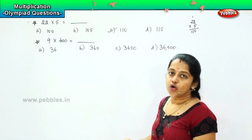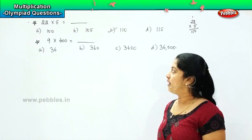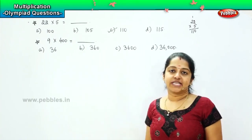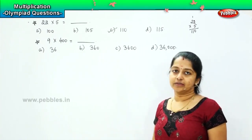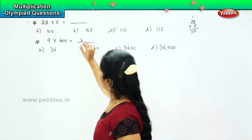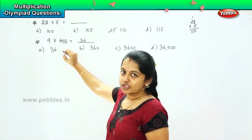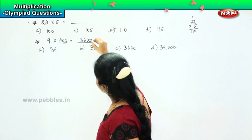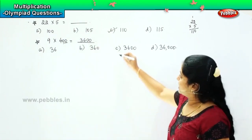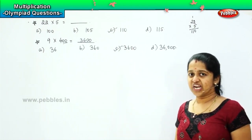So this follows the multiplication rule of 10s and 100s, where we will be adding the number of 0s towards the end of the answer. What is 9 into 4 children? Very good, 9 4s are 36. And how many 0s are here? 2 0s, so which means that we will be adding 2 0s behind the answer. So what is my answer? Good, it is C 3600. Clear, shall we move ahead?